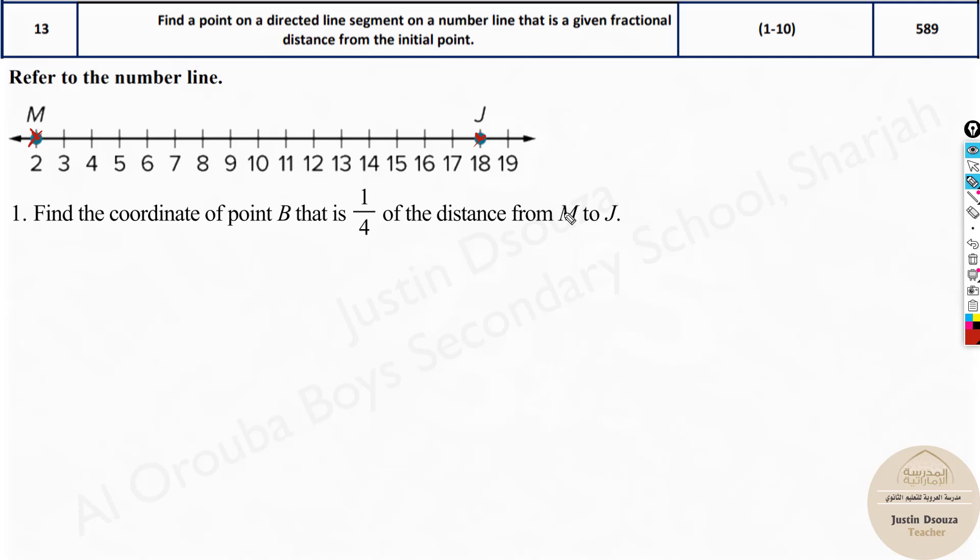Now here it is very important to know which is the initial point and the final or the terminal point. Initial is where we start, M, and J is the terminal or the final ending point. We will call it as x₁ over here and this is x₂.